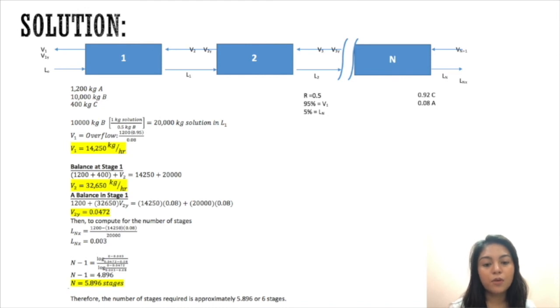Now to compute for the number of stages, we divide the kilograms of A minus V₁ times its composition in the exit divided by the kilograms of solution in the underflow. You will get ln(x) of 0.003.